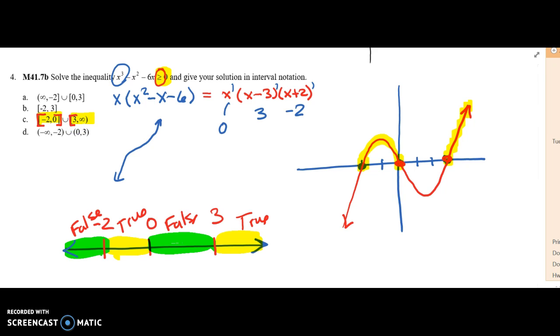An alternative way, once you have the problem factored and you know your zeros, you could put them on a number line and test values between. You would also get true from negative 2 to 0, and from 3 to infinity.